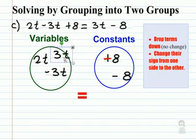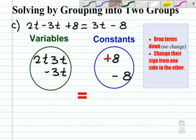Likewise, this 3t. That's my variable. From one side onto the other side, it becomes negative 3t.